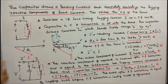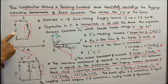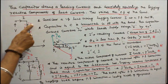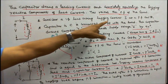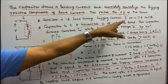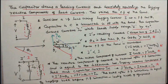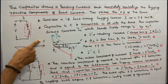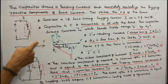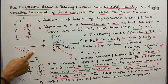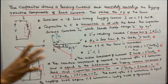Consider a single-phase load. Here V is the supply voltage, I is the load current, this is a resistor, and this is an inductor or load. Taking lagging current I at the power factor cos theta 1. This is the phasor diagram — this is the supply voltage, and this is load current I. The angle between V and I is theta 1, so the power factor is cos theta 1.